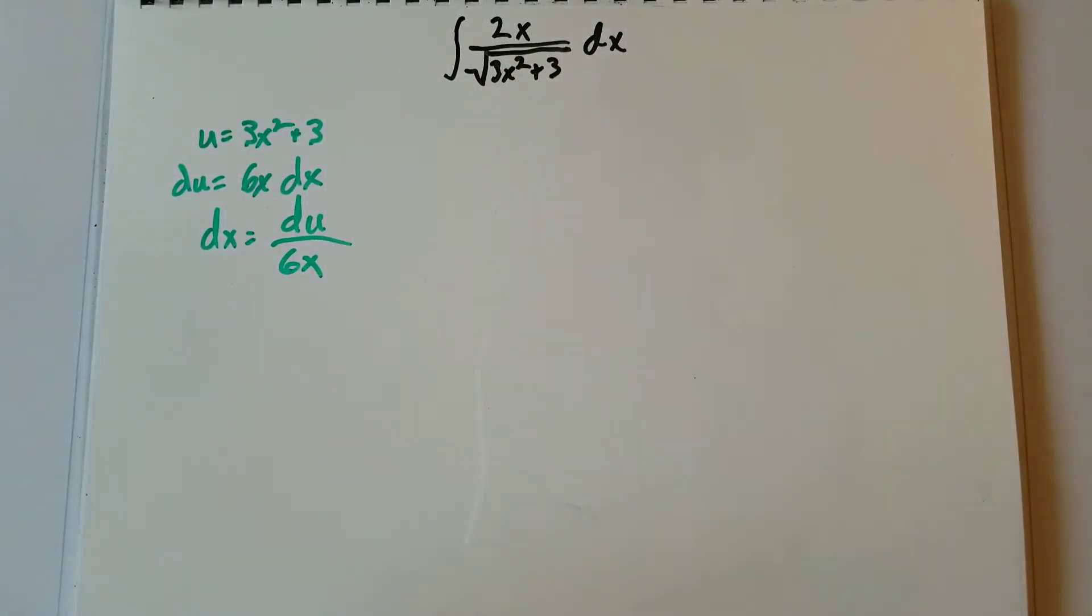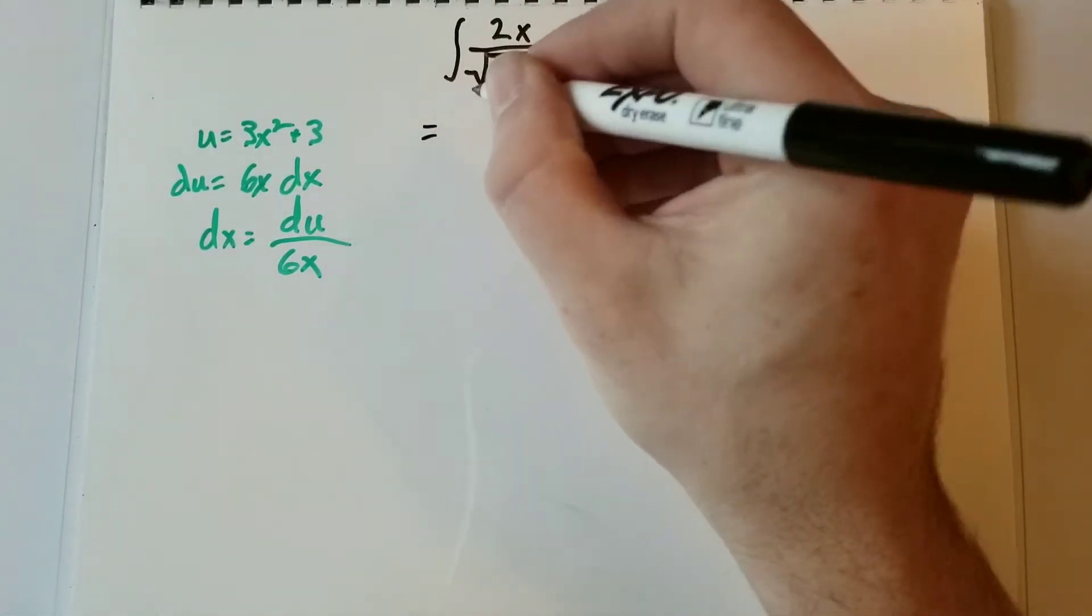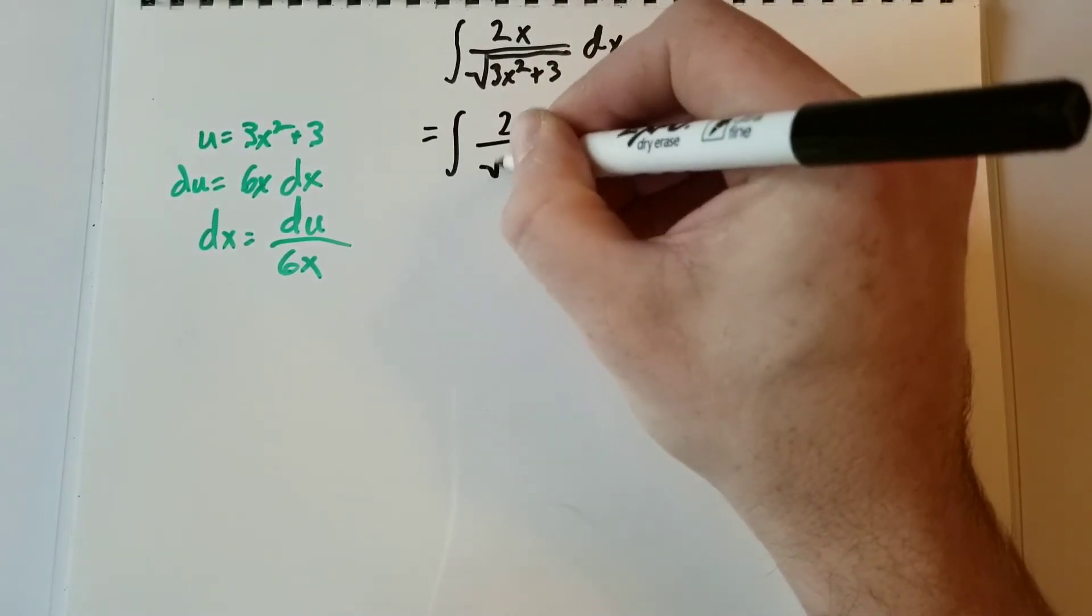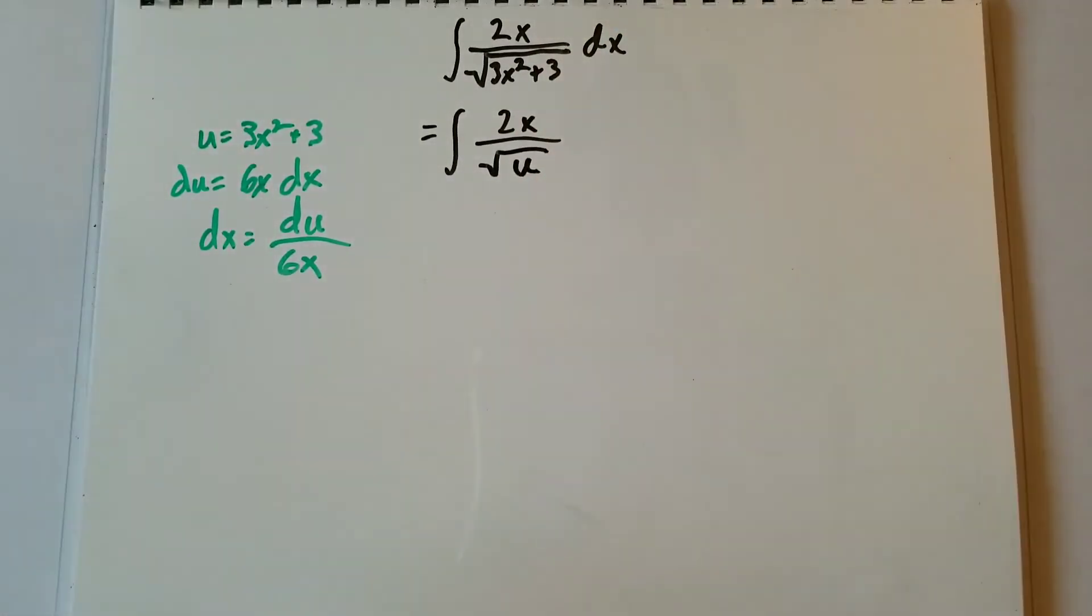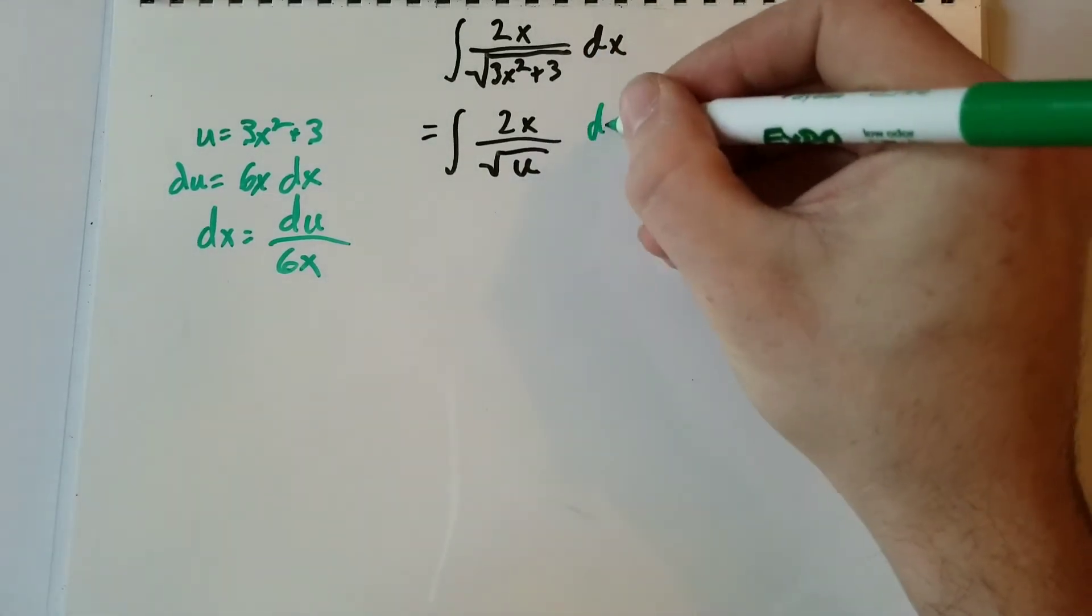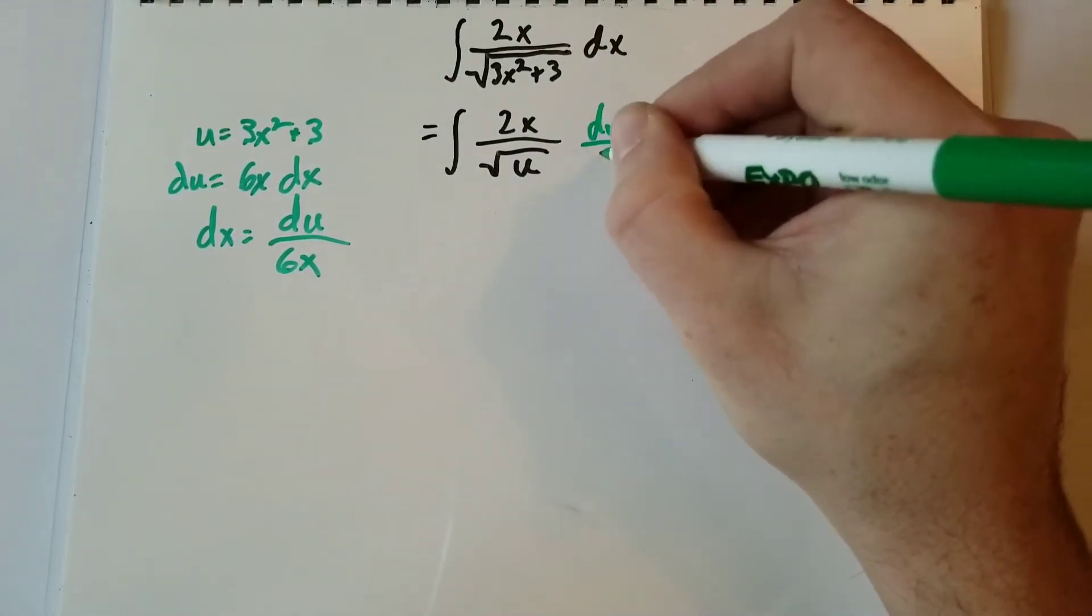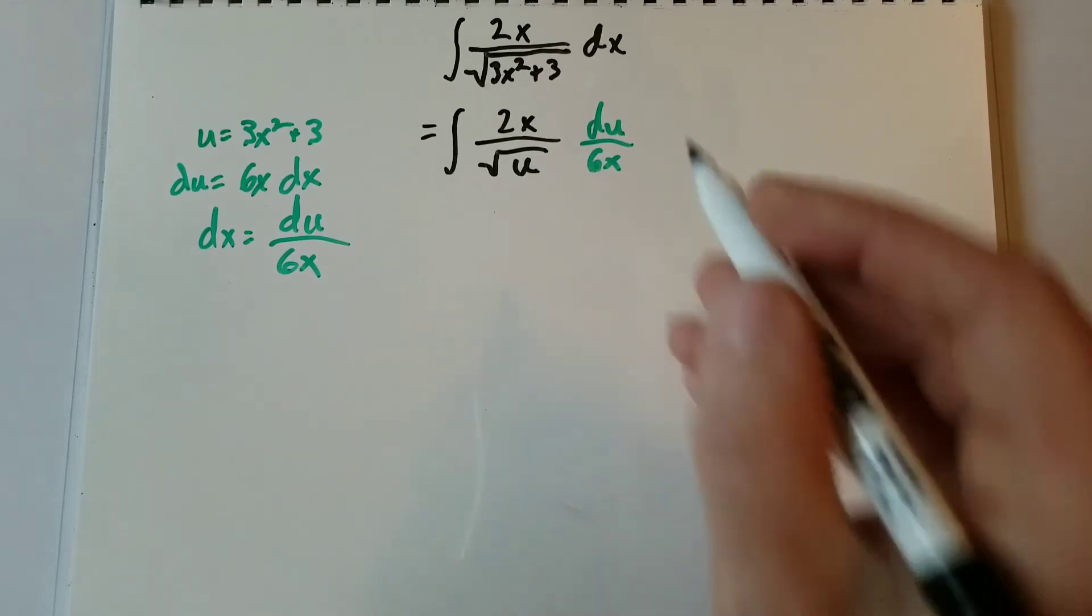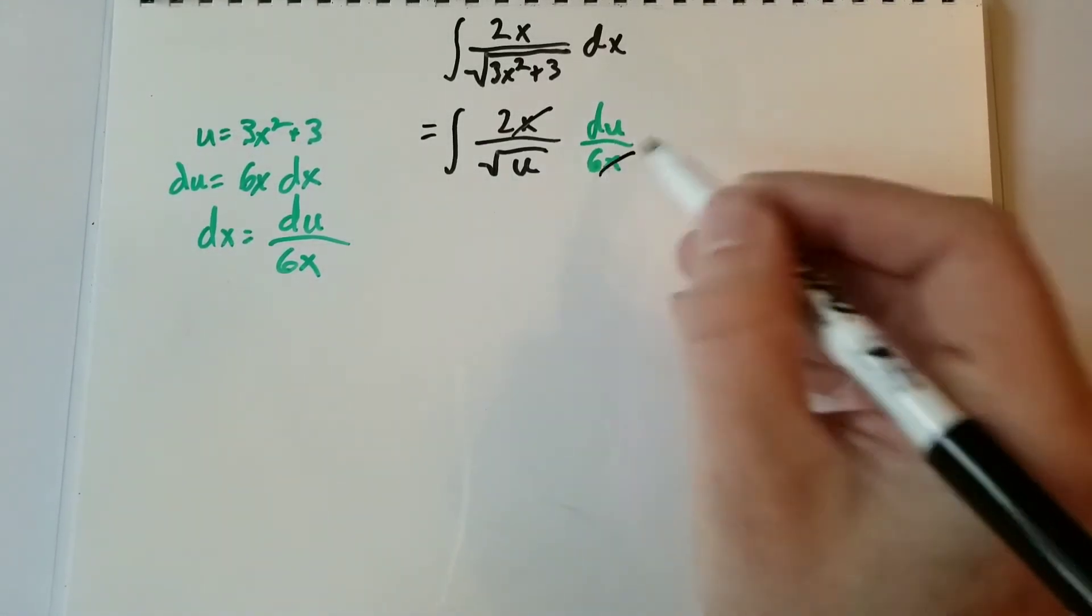Okay, so now that we've got our u figured out, we can go ahead and substitute it in. The integral of 2x over the square root of u, du over 6x. Now at this point, we can see that our x's cancel out.